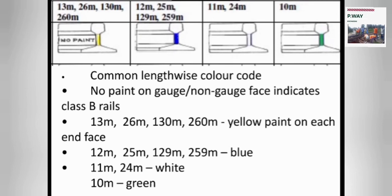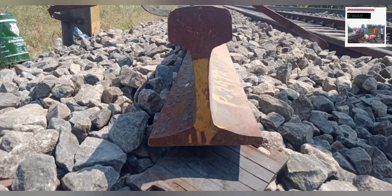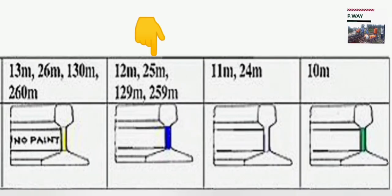Next, we can see the lengthwise color codes. The length of the rail is also identified by different colors. Rails of length 13m, 26m, 130m, and 260m are painted with yellow color on both faces of the web region. If the rails are reduced by a length of 1m, then 12m, 25m, 129m, and 259m rails are painted with blue color on the web region of both faces at both ends.